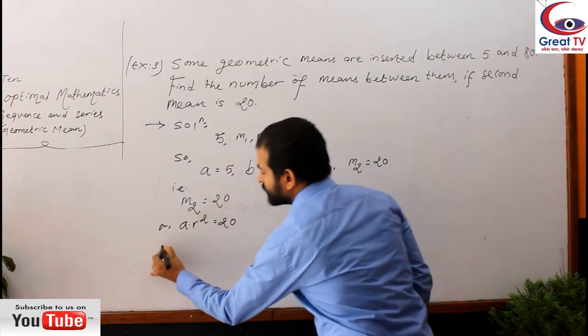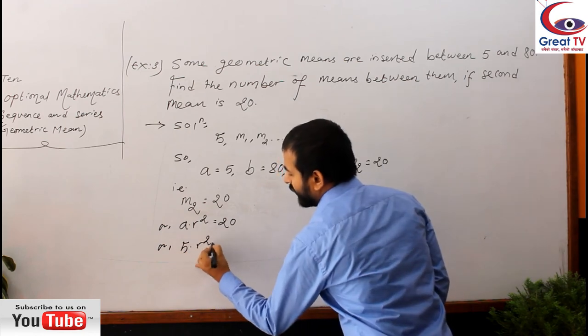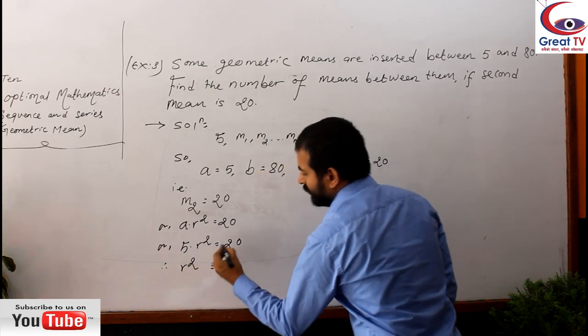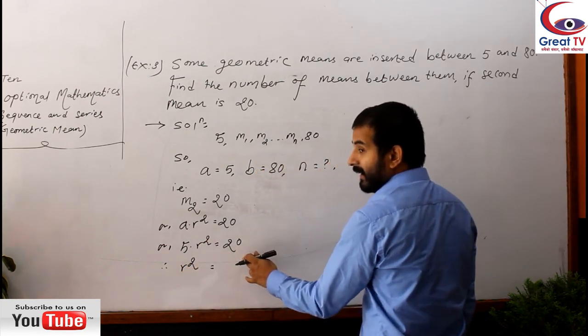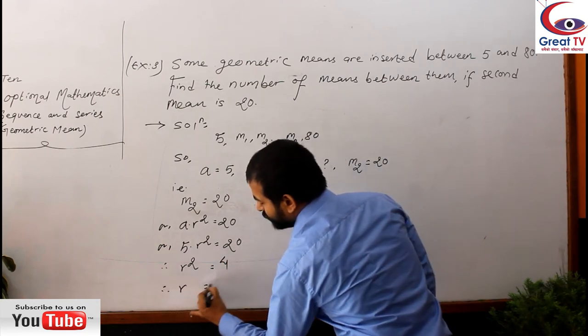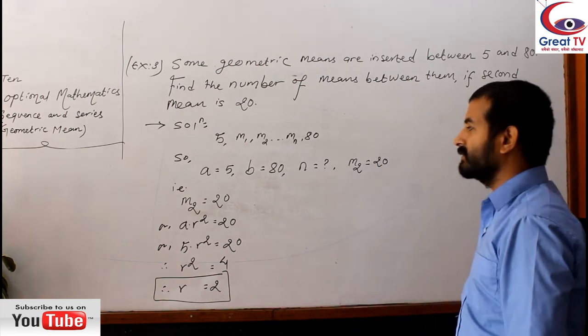So now, since we have the first term A, that is 5·R² = 20, R² equals to - now it will divide - so what is the result? 4. Therefore R equals to 2. You can relate. So it means you got the common ratio.